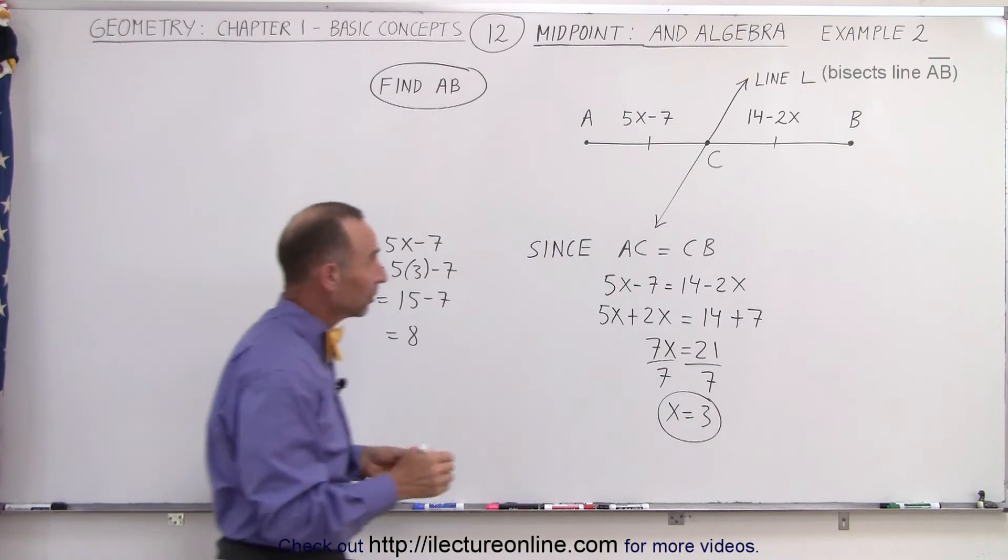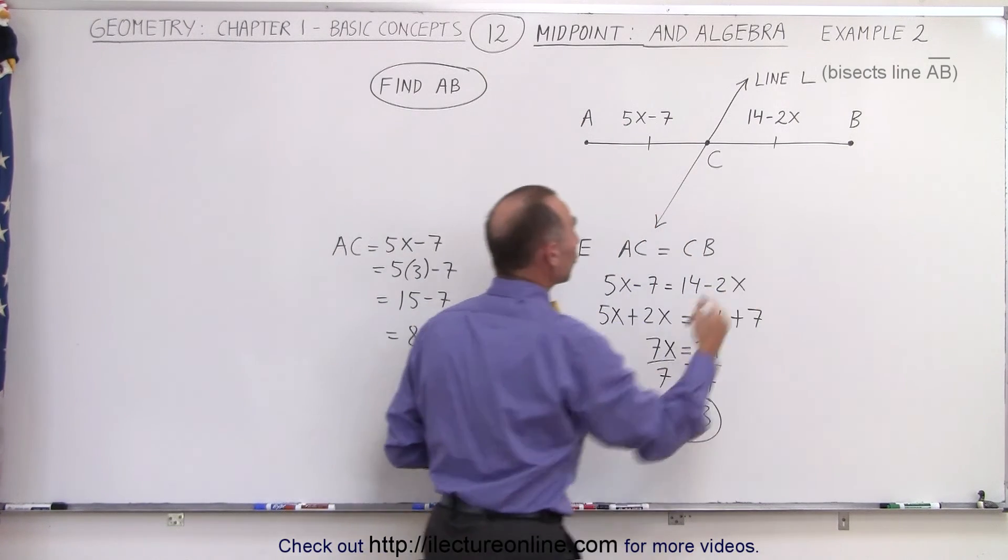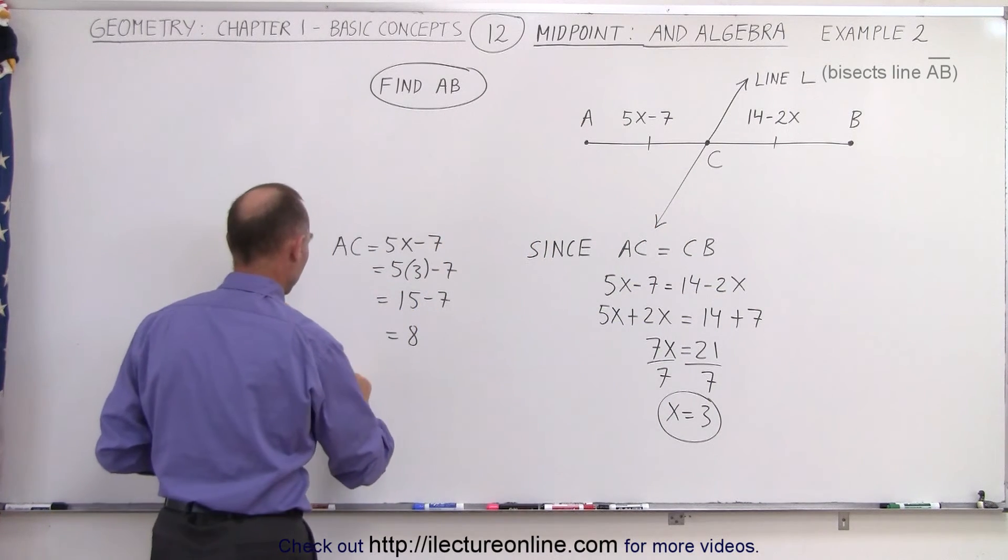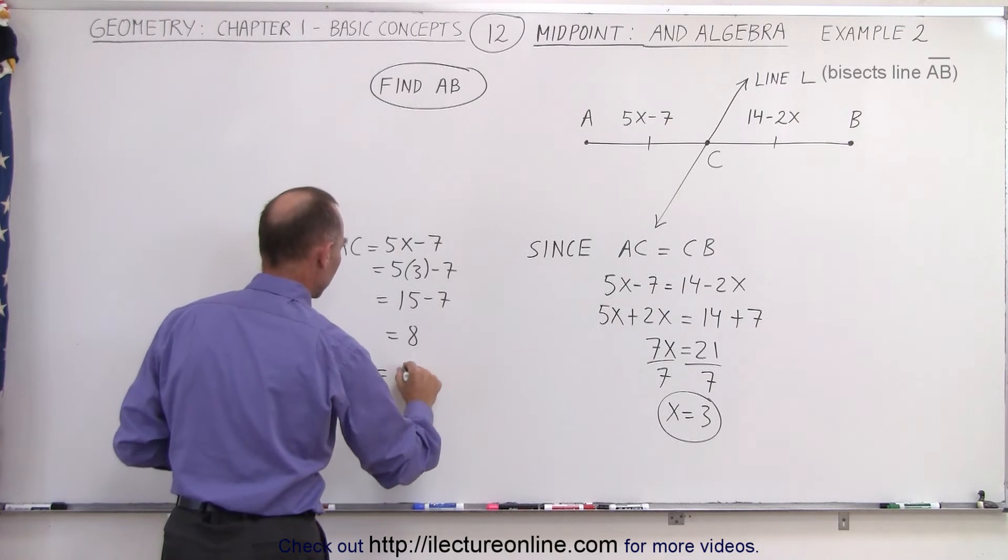The two should be equal to each other, that means the length from C to B must also equal 8. So from C to B is also equal to 8.